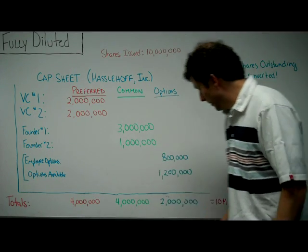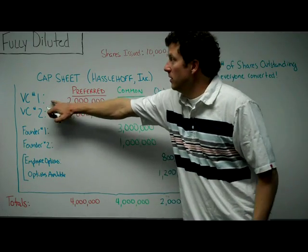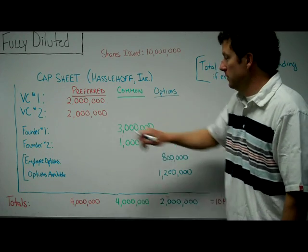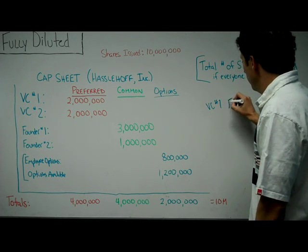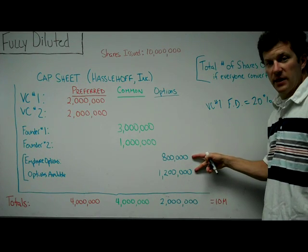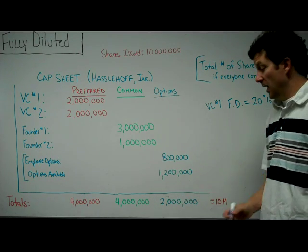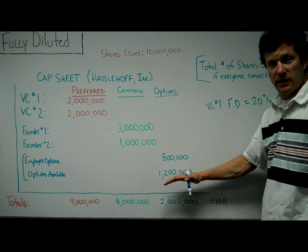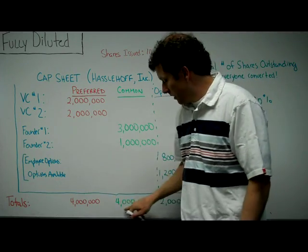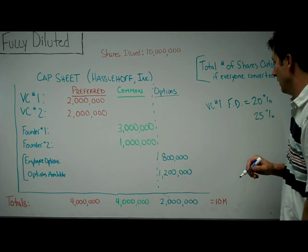Each VC investor owns two million shares, one founder owns three million, and the other owns one million — so each group totals four million. Roughly 20 percent of the company has been allocated to the options pool, though those options haven't been converted to common stock yet. Adding all numbers up gives 10 million shares outstanding. On a fully diluted basis, VC number one owns 2 million out of 10 million — that's 20 percent. But if the options aren't exercised, there are only 8 million shares outstanding, making VC number one's stake 25 percent — a significant difference.